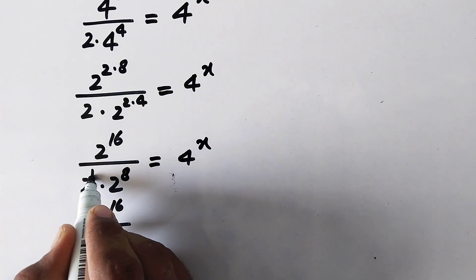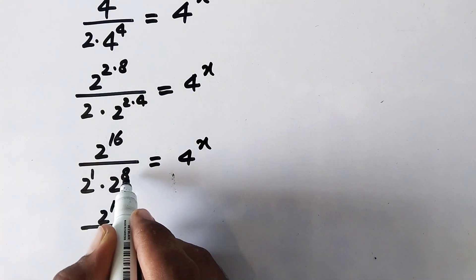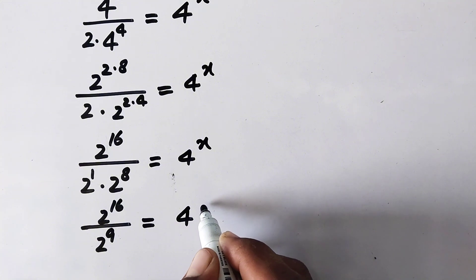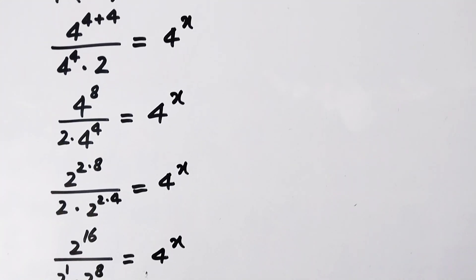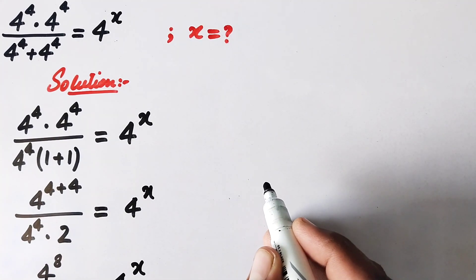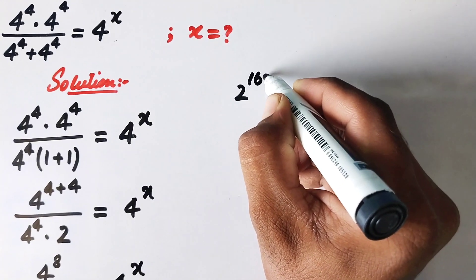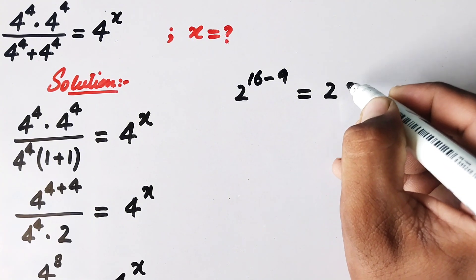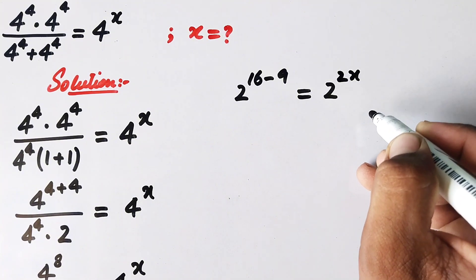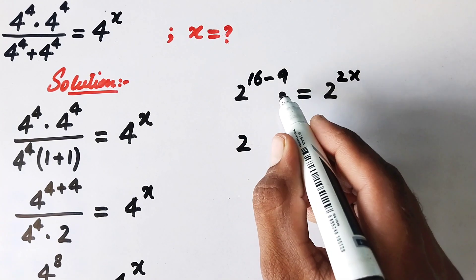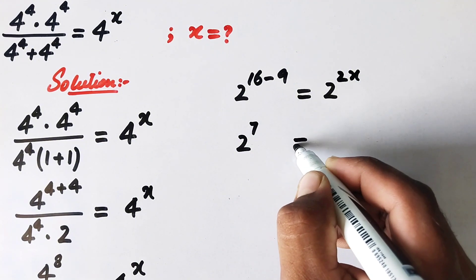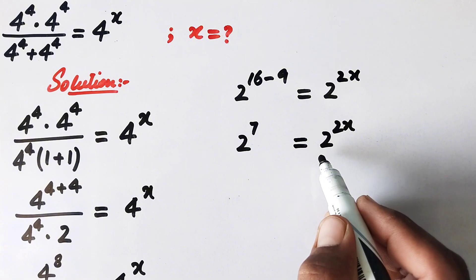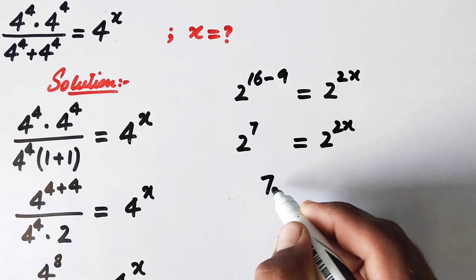In the denominator, we take 2 to the power 1 times 2 to the power 8, which is 2 to the power 9. So we have 2 to the power 16 divided by 2 to the power 9, equal to 4 to the power x, which is 2 to the power 2x. Then 2 to the power (16 minus 9) equals 2 to the power 7, which equals 2 to the power 2x. Since the bases are the same on both sides, we compare the powers: 7 equals 2x.